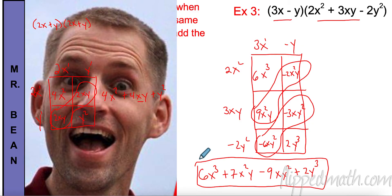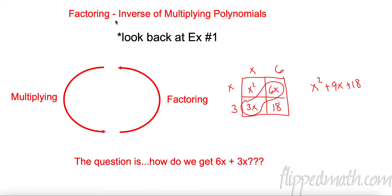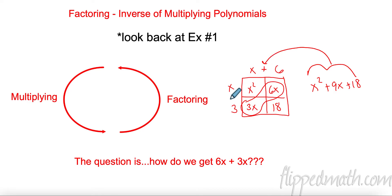Now we're going to talk about factoring, and factoring is the inverse of multiplying. Remember we did (x + 6)(x + 3) and got our answer using the box. Now we're going to go backwards — we'll take that polynomial and recover x plus 6 and x plus 3. The first term goes in the first box, the last term goes in the last box. The real question is: how do I get 6x and 3x in the middle boxes?